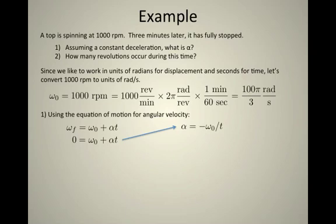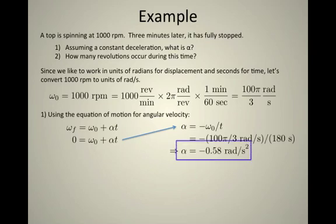Alpha is equal to minus omega naught over t. If we put in the numbers that we know, 100 pi over 3 and 180 seconds for 3 minutes, we get alpha is minus 0.58 radians per second squared.